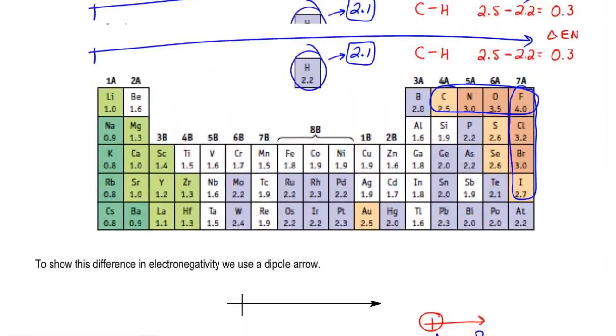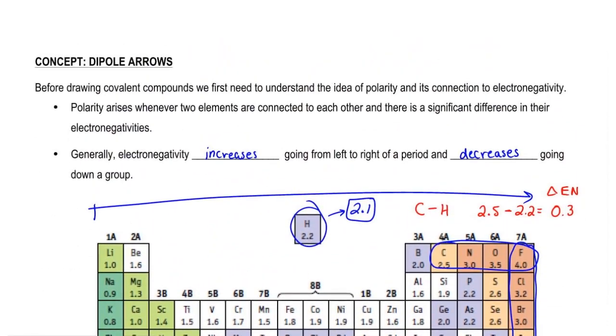Just remember, electronegativity is similar to electron affinity. It just means the liking of an element towards electrons. This connects to the idea of polarity. And later on when we start to draw compounds, we'll see how it plays a role in the way we draw these compounds.